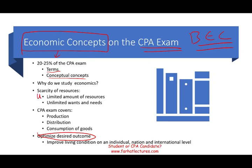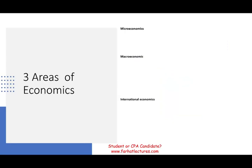If we had unlimited resources, we wouldn't need to study economics — we could do whatever we want without giving up any alternative. But we have a limited amount of resources, and this is where the scarcity of resources becomes the basic theory behind why we study economics. Now, there are three areas of economics we need to be familiar with for the CPA exam: microeconomics, macroeconomics, and international economics.